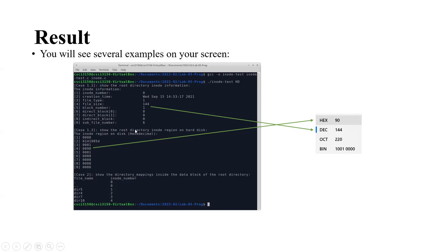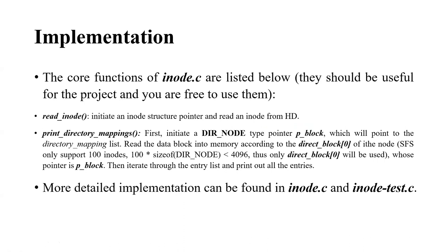I will do this experiment together with you. Finally, let me talk about some implementation issues. The core functions in inode.c are two: read_inode and print_directory_mappings. The read_inode initializes inode space in memory and then reads the inode from the hard disk. This is very similar to the read_SB from last week — last week we read the superblock, this week we read the inode.